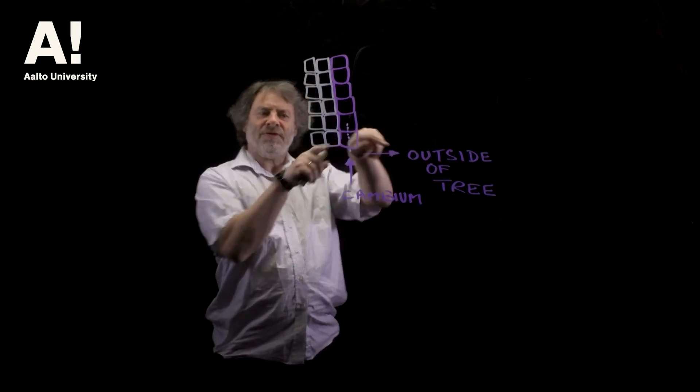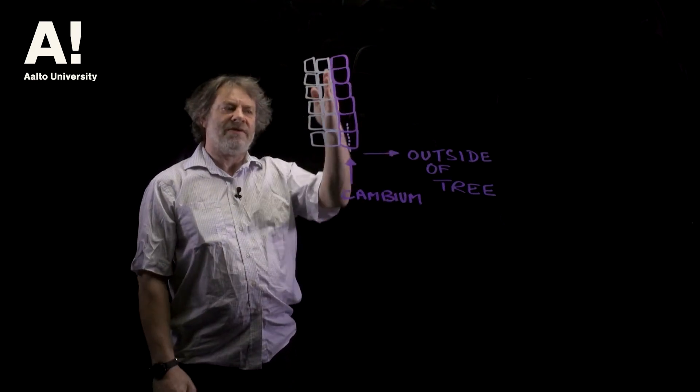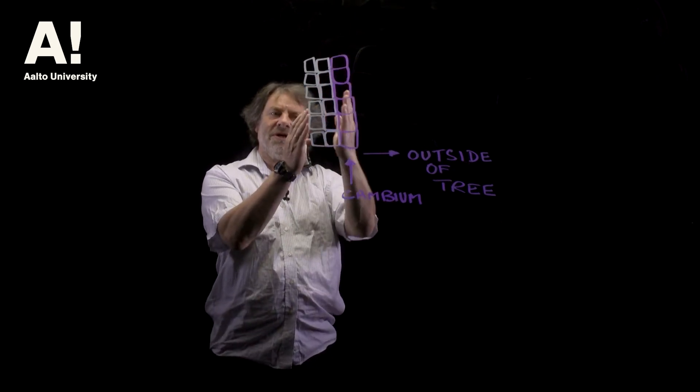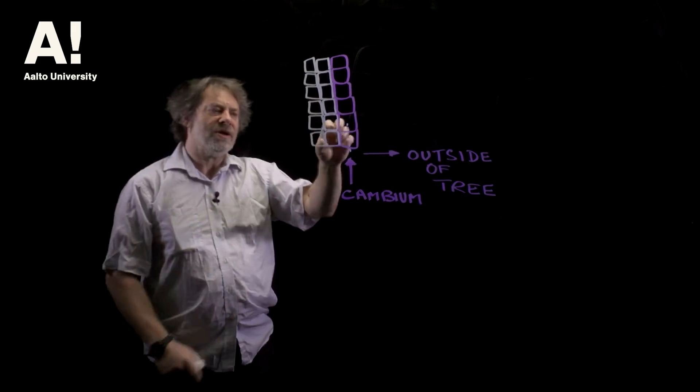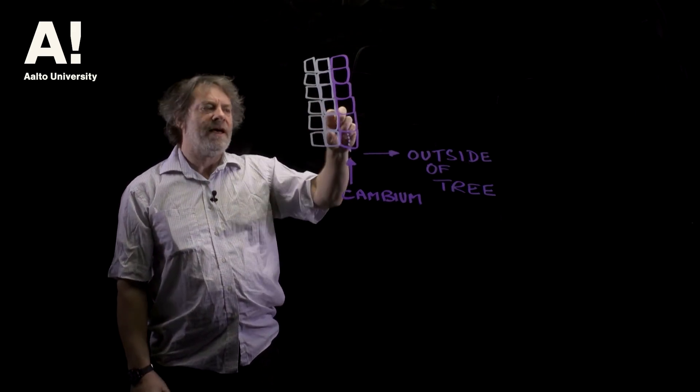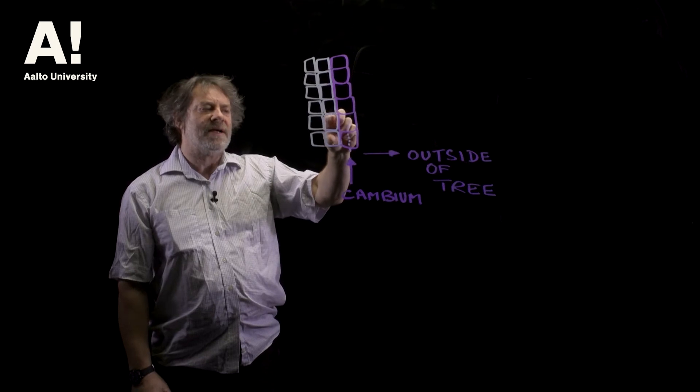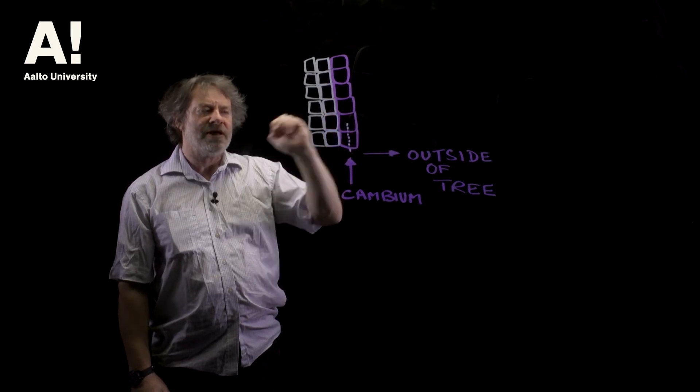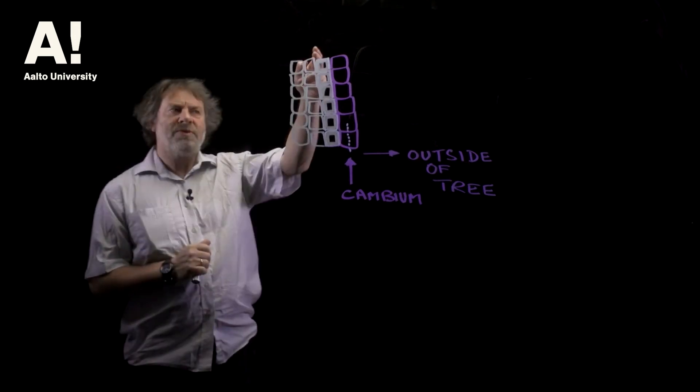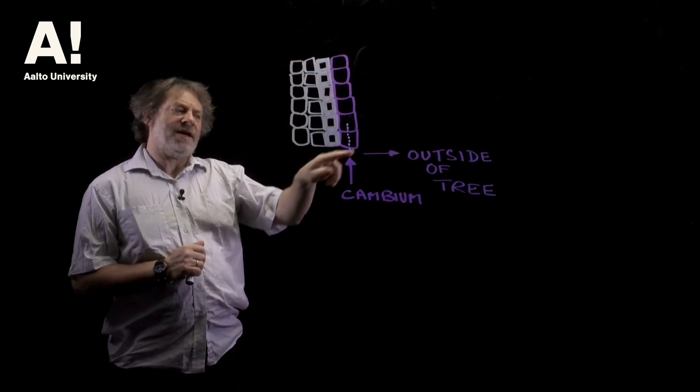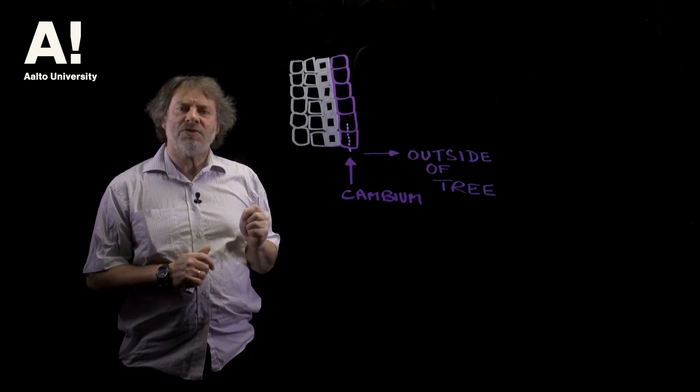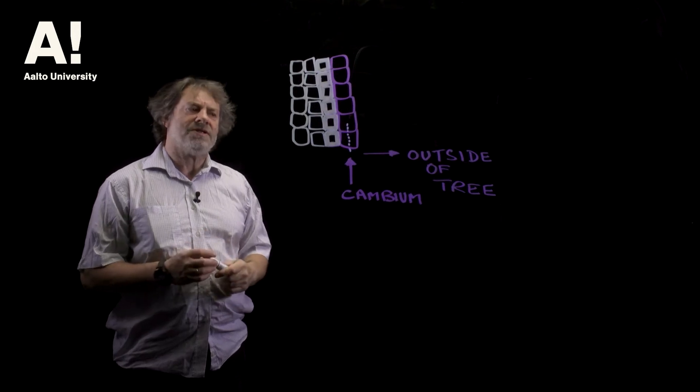Okay so cambium has moved that way, it's laid down another layer of cells and as it does so we start getting these growth rings forming. So these have got very thin walls and as a consequence they must be earlywood tracheids. Okay so we've now got a layer of cells that's been laid down as the cambium moves outwards and these have got much thicker walls so we're beginning to lay down latewood so we're moving on in the season.